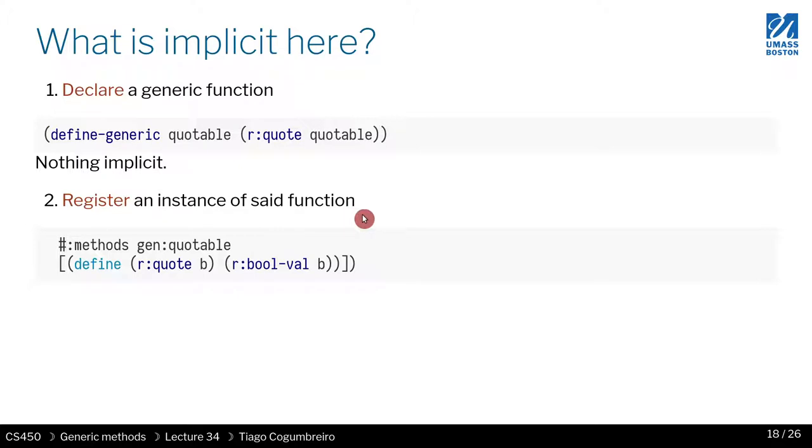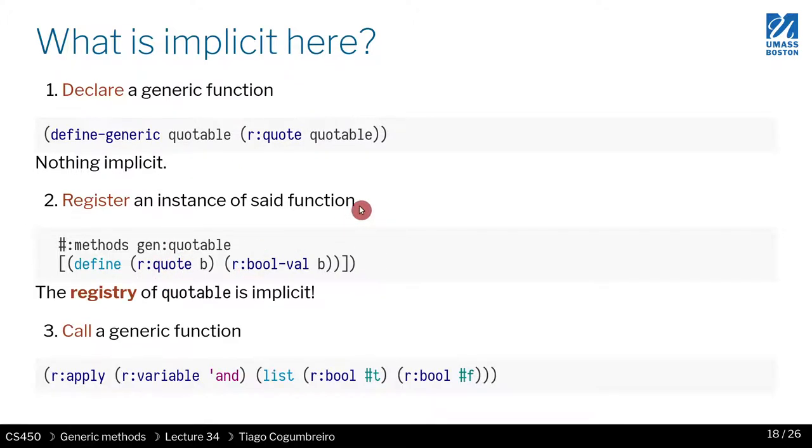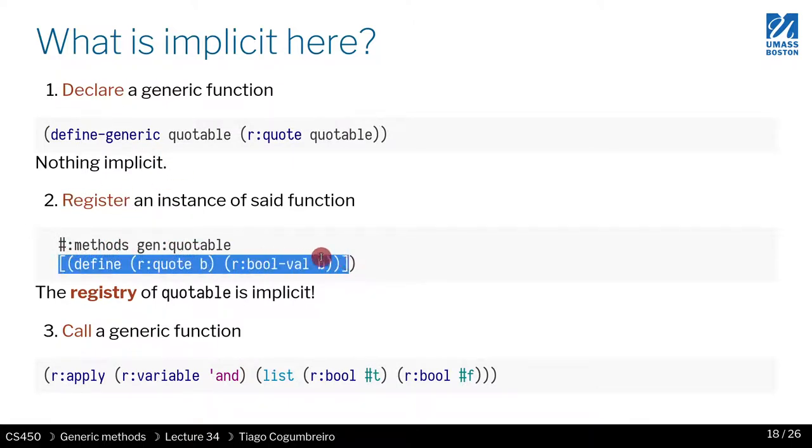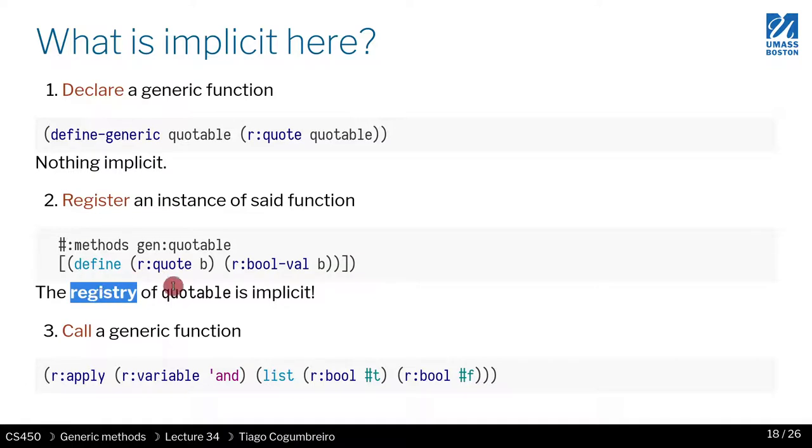When we register an instance, what is implicit here? Well, the registry itself, right? Where we store all the things being registered is somehow implicit. We are connecting it to quotable, but there is some kind of storage where we store each struct as being assigned to a certain function.